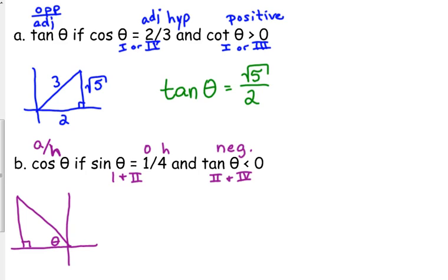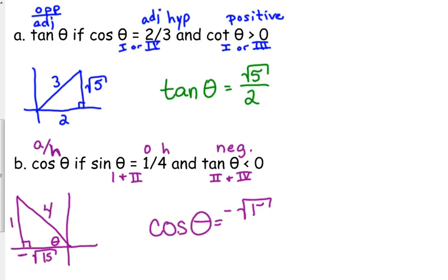So I can set up my triangle. The opposite is one, the hypotenuse is four. Pythagorean theorem: four squared minus one squared is 15, so the adjacent is the square root of 15. A little detail — we're in the second quadrant, so that has to be negative: negative square root of 15. You've got to make sure that once you locate the quadrant, your coordinates agree accordingly. So the cosine of this angle is the adjacent, negative square root of 15, over the hypotenuse of four.